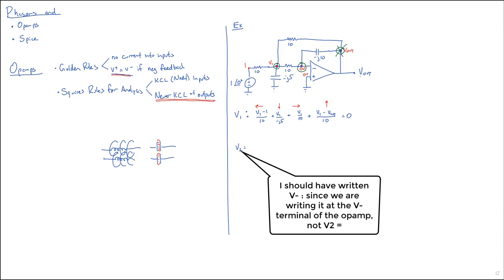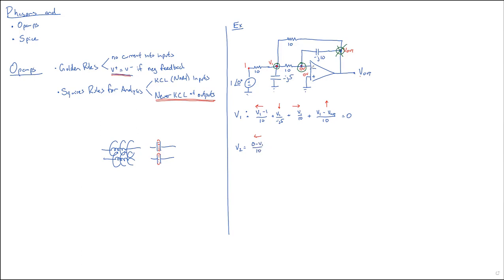Now let's do our second KCL around the zero-volt node. Moving to the left, Linda? Zero minus V1 over 10. Going up is zero minus V-out over negative-J10. JT, what is the current going to the right into the op-amp? It would be zero — that's zero because there's no current into the op-amp input. So the whole thing equals zero. At this point you've got all the equations, you've got all the unknowns. The only question is how you're going to solve it, and that depends on what kind of calculator you have.